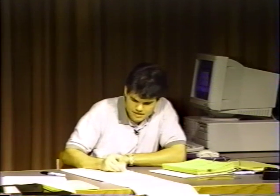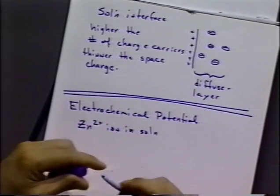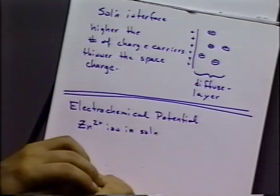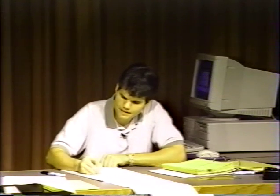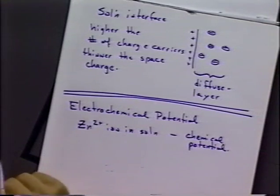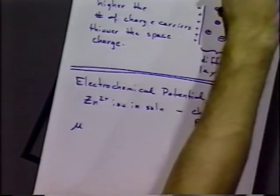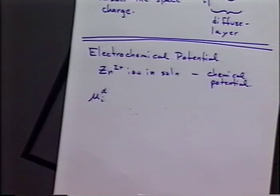The word electrochemical potential arises by analogy to a concept in thermodynamics called the chemical potential. Let's consider a zinc ion in solution. You might remember from P-Chem that we can consider the zinc ion to have a chemical potential, and that would be as a result of that ion's interaction with the solution phase, the solvent — also with other ions in the solution. There will be a chemical potential for that particular ion. We use the notation mu to indicate chemical potential. So we can think about a species I in a phase alpha would have a chemical potential notated like so.